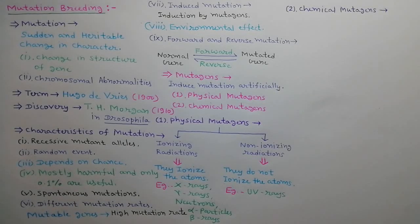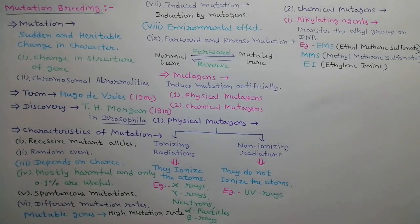We will discuss chemical mutagens. They include many types. First is alkylating agents. They transfer the alkyl group on DNA. This transfer occurs on N ring of guanine. For example, EMS ethylmethanesulfonate, MMS methylmethanesulfonate, and EI ethylene imine.